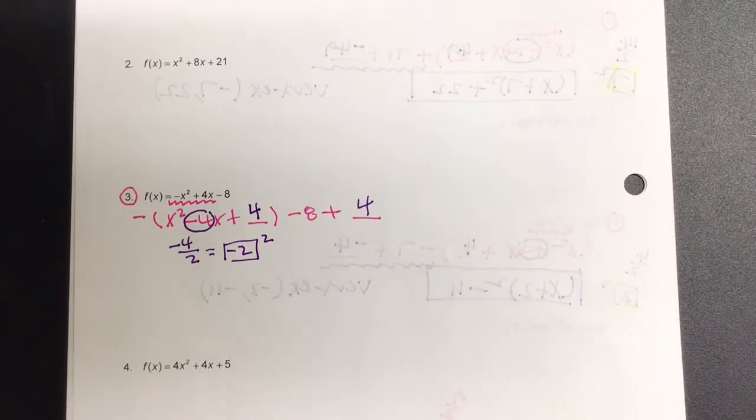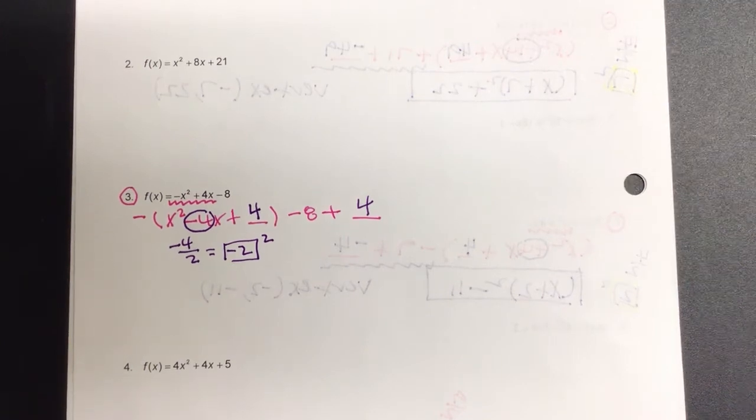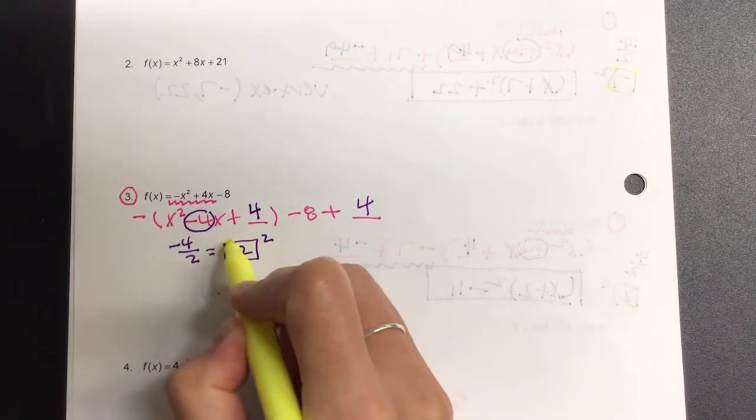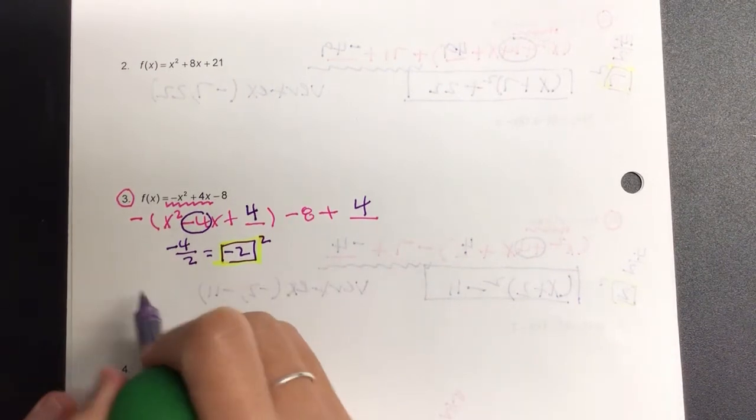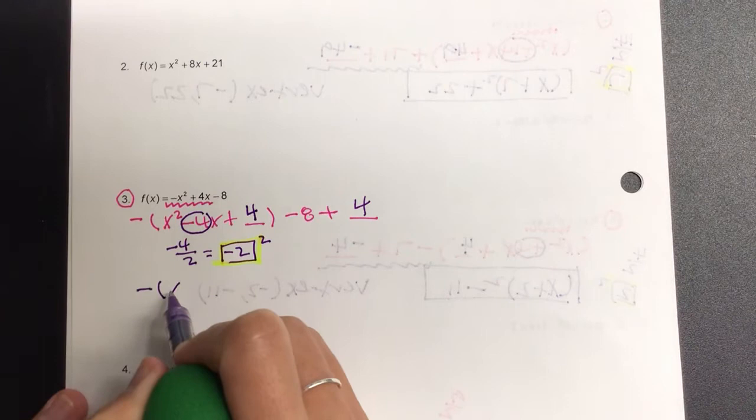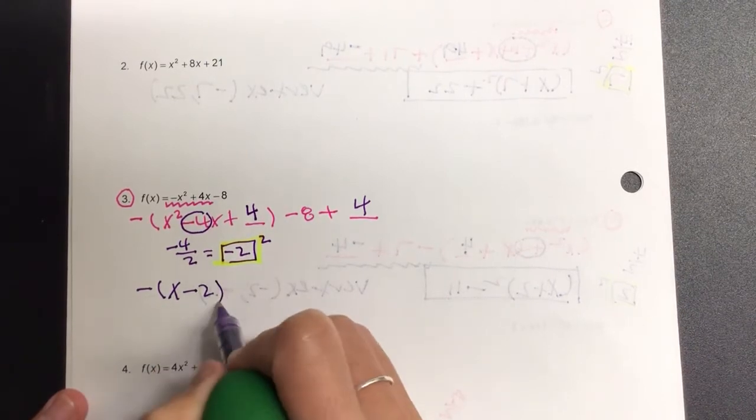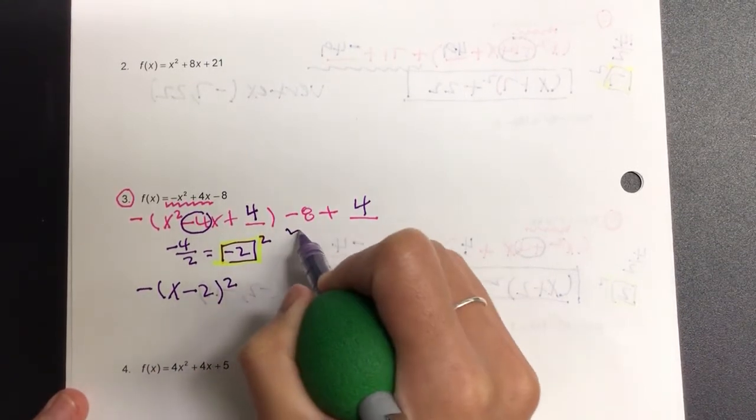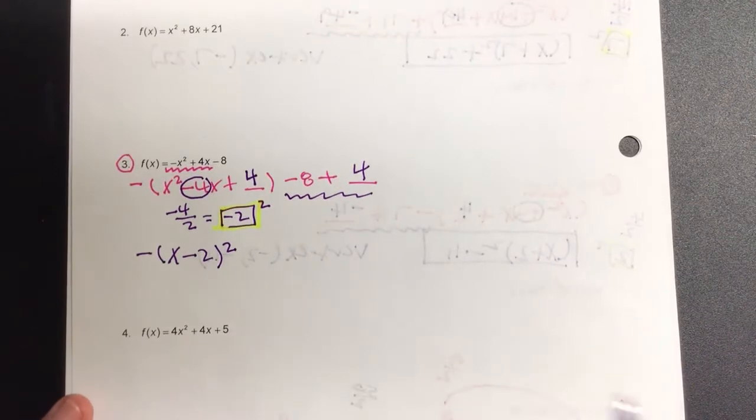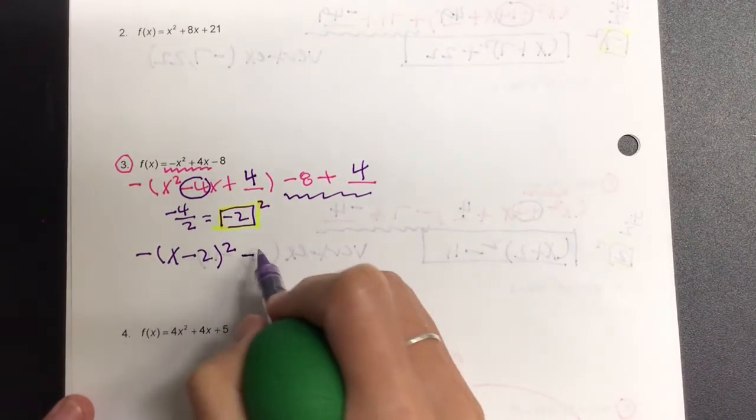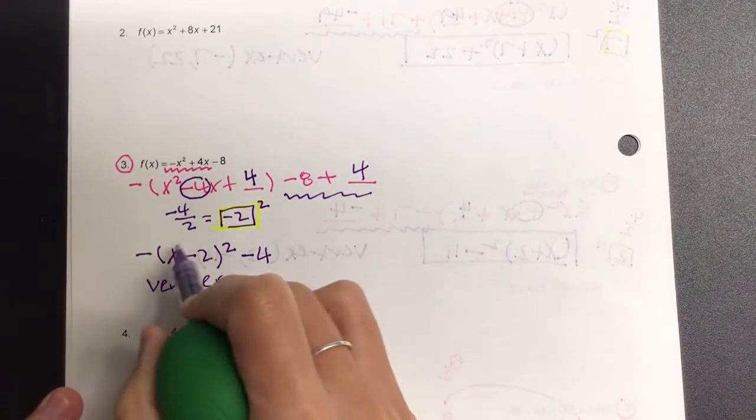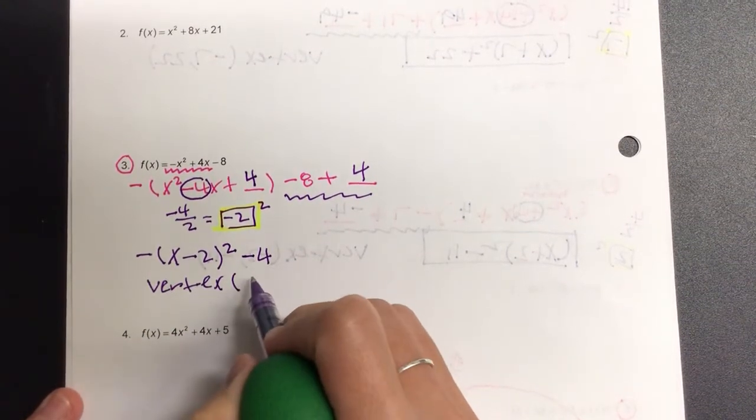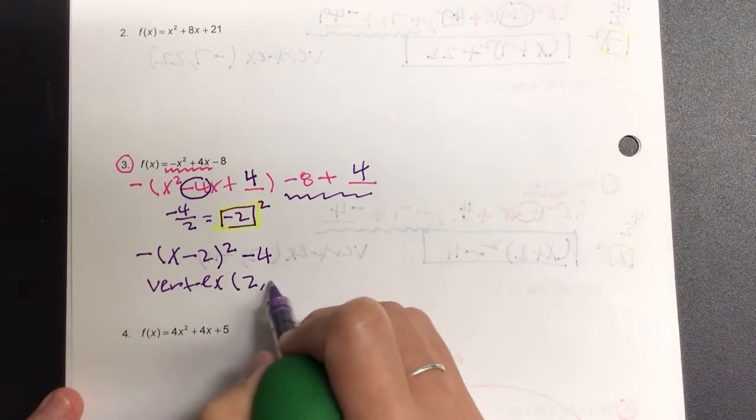Okay? So from there, the reason we box it is because it is the what? The answer. So our vertex form is going to look like that negative we took out, I can't do anything about. So leave that alone. x minus 2 all squared. On the outside, negative 8 plus 4 is how many? Negative 4. So that tells me my vertex. Inside, again, it's always the opposite. So what's the x-coordinate? 2 negative 4.